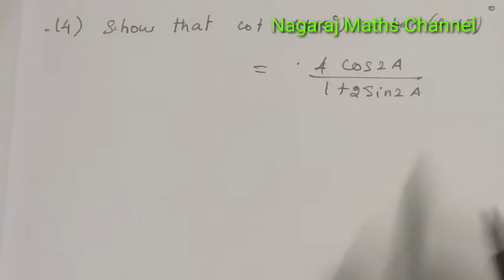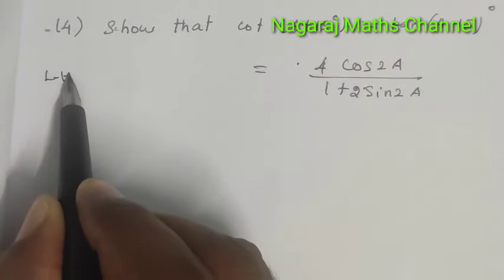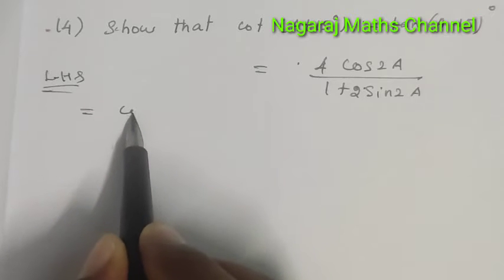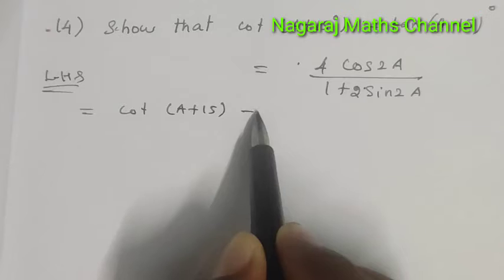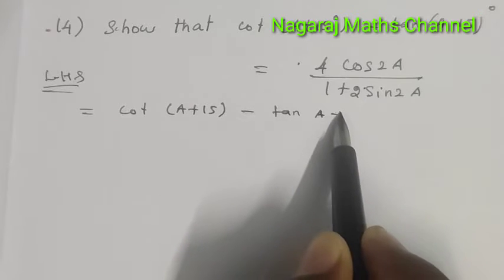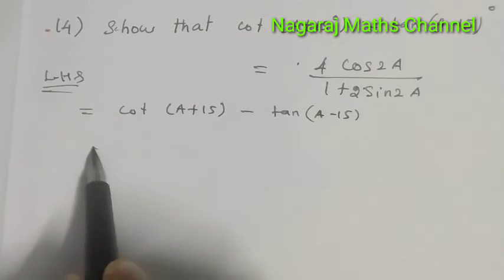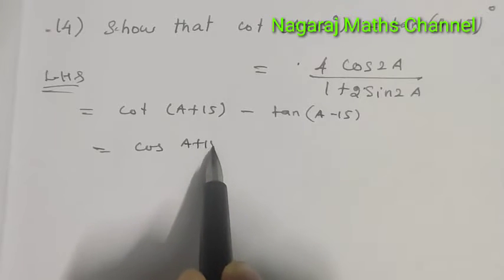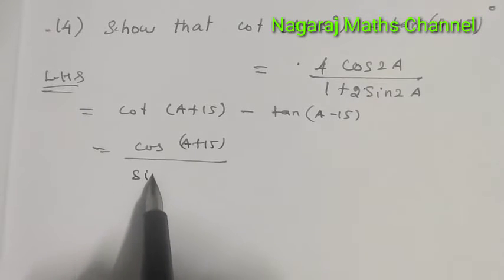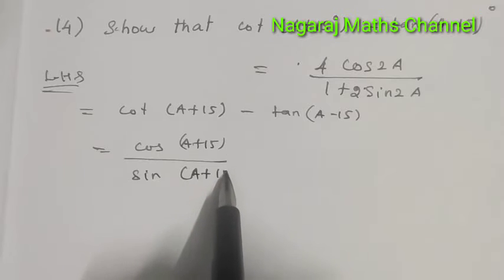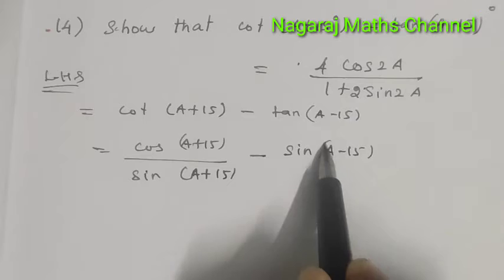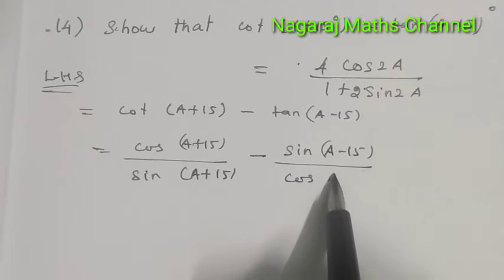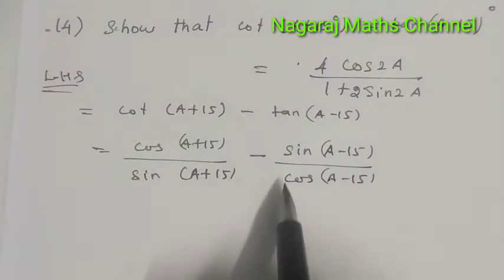Let's get started. Taking the LHS: cot(A+15°) - tan(A-15°). Converting these: cos(A+15°)/sin(A+15°) - sin(A-15°)/cos(A-15°).